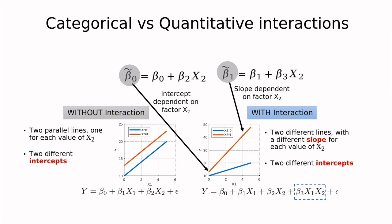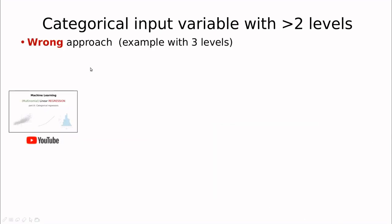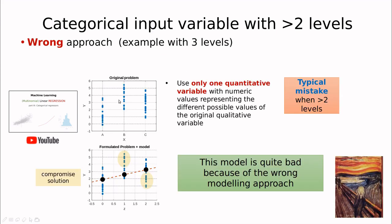What does interaction between categorical and quantitative variables mean? That means that for each group we have a different intercept and a different slope. What if we have more than two levels? Remember this video where we discussed that we cannot consider this factor as a quantitative number with three levels. We have to create dummy variables. Otherwise you're going to do this compromise solution that is misleading.